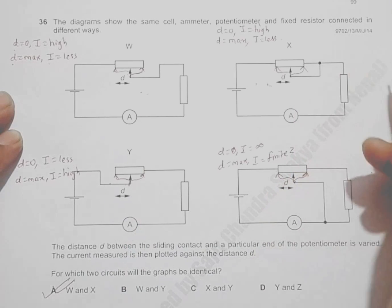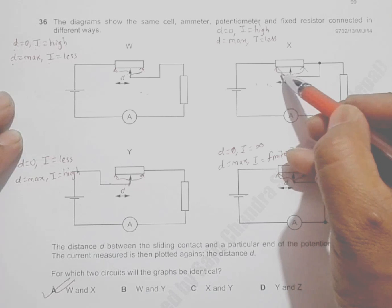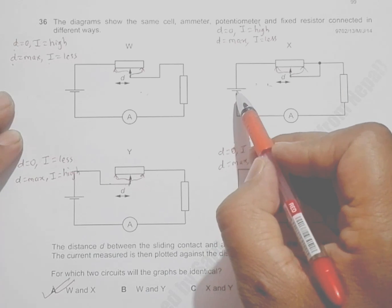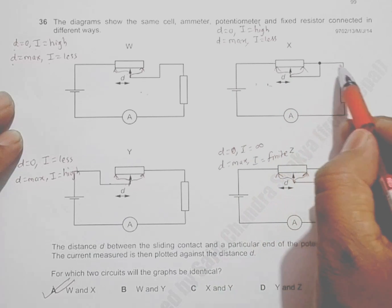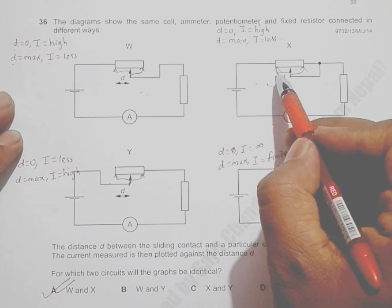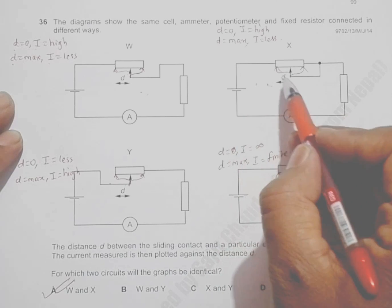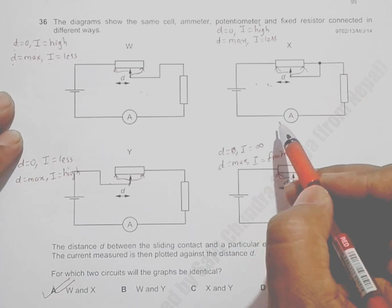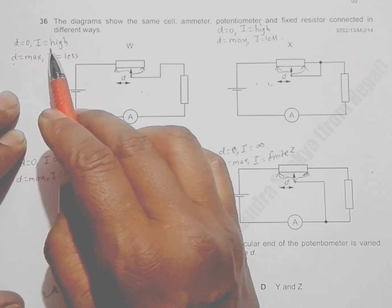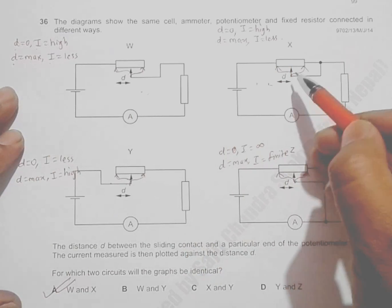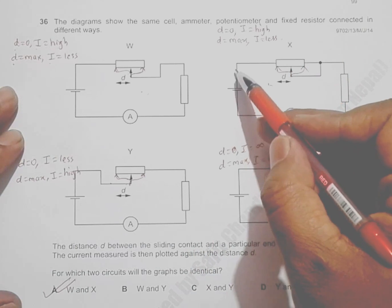In the second case, when the contact is at the left end (d=0), current flows from the source and totally bypasses the fixed resistor. So current flows through only one resistor, making the current high — the same value as in the first diagram.